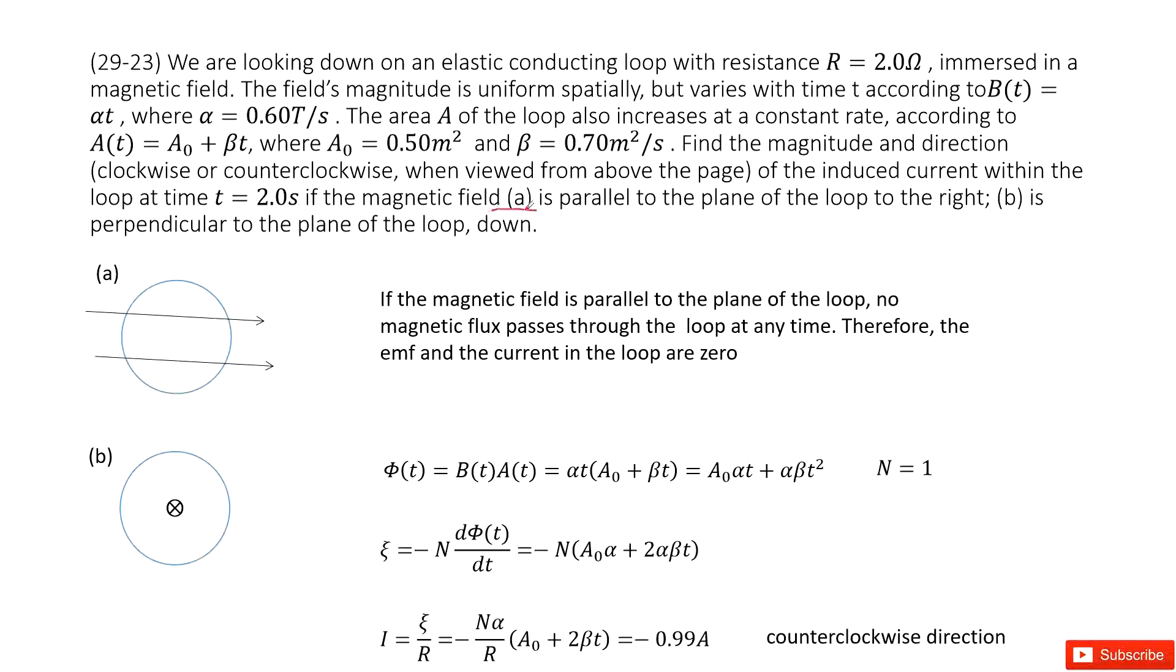First one, if the magnetic field is parallel to the plane of the loop to the right. So this is the first situation. The loop is there. The magnetic field is just parallel to the plane. So in this case, we can see there is no magnetic flux. So no magnetic flux goes through. So the induced emf is zero. Current is zero. Very easy to understand.